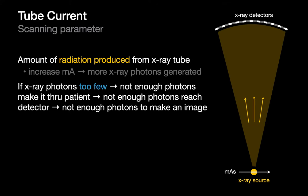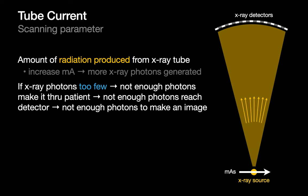X-ray tube current, expressed in milliamps (MA), influences the number of x-ray photons coming out of the tube. The more tube current, the more x-ray photons we shoot at the patient. It's important to shoot enough photons; if not enough reach the detector, we can't create an image. However, if we shoot too many, we'll create a picture but possibly give the patient an unhealthily high amount of radiation exposure.